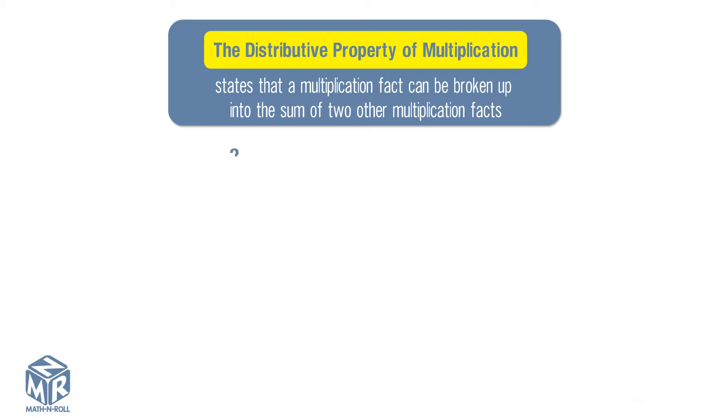Let's take a look at 3 times 9. We can rewrite 9 as 4 plus 5. Next, we multiply 3 by each addend, 4 and 5.